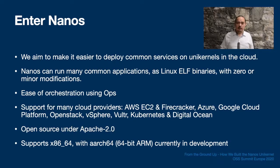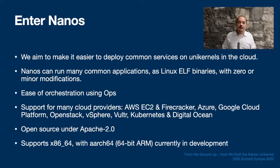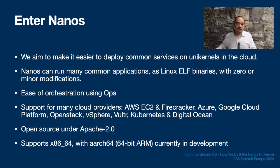Unlike unikernels that focus on specific language support, we concentrate on binary compatibility and as such support virtually any compiled language out of the box. As for language runtimes, Python, Perl, Node, Ruby, Java, PHP, Clojure, R, Elixir, and Lua are just some of the languages known to work under Nanos.